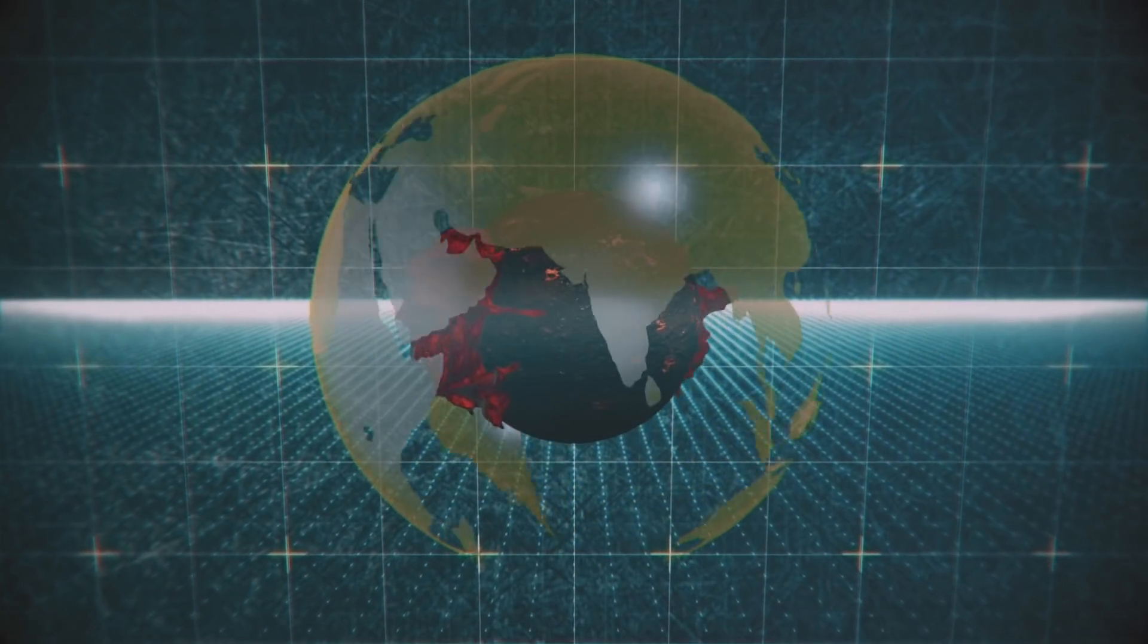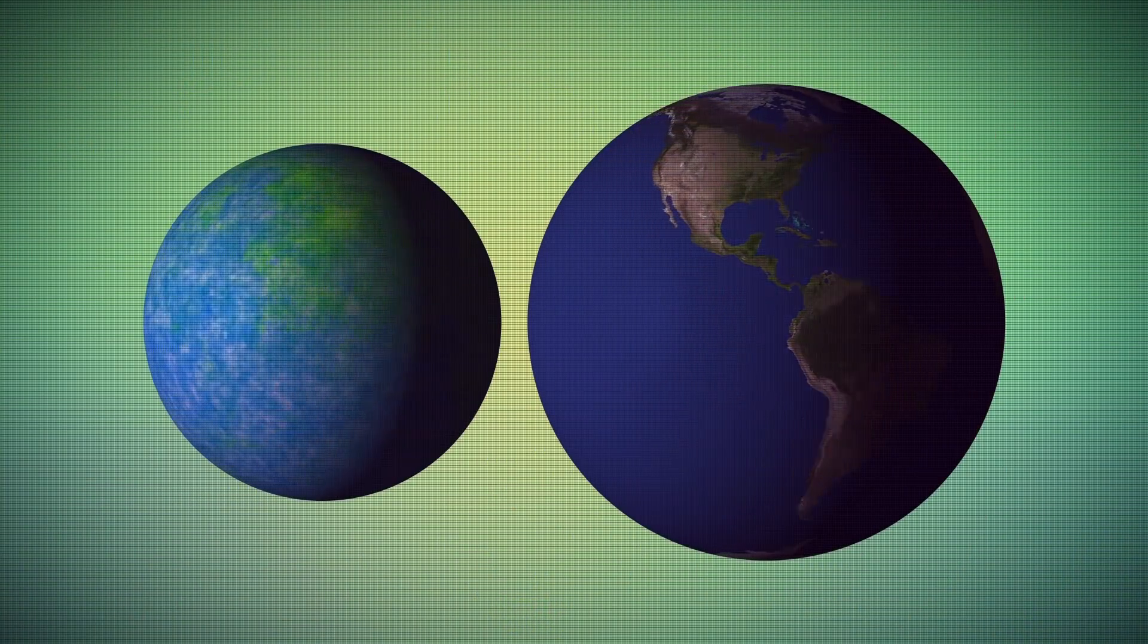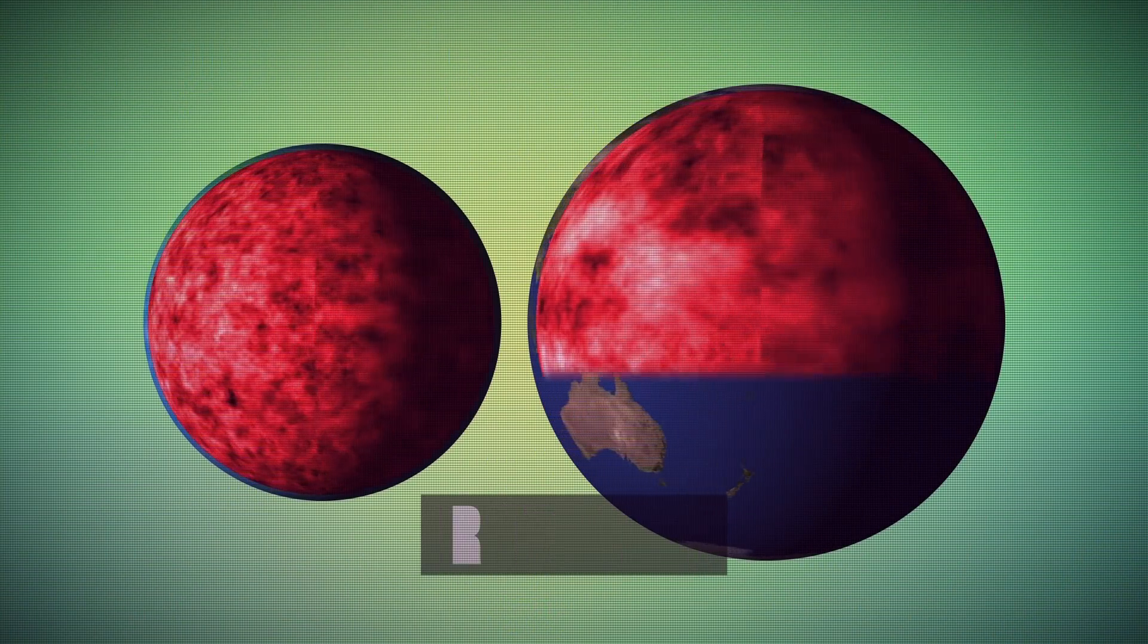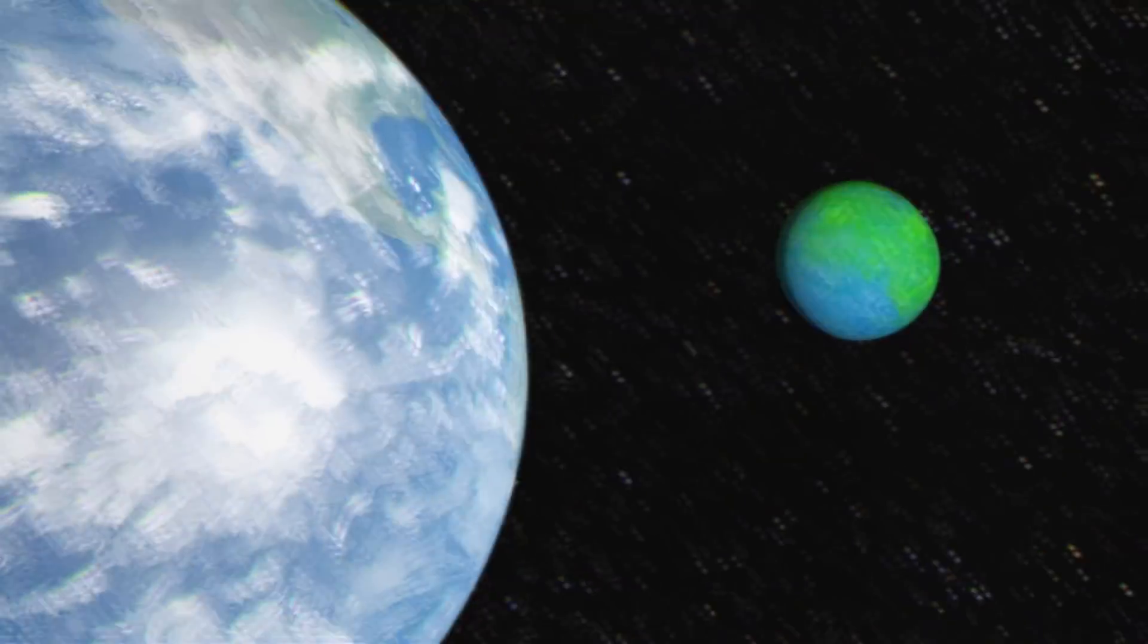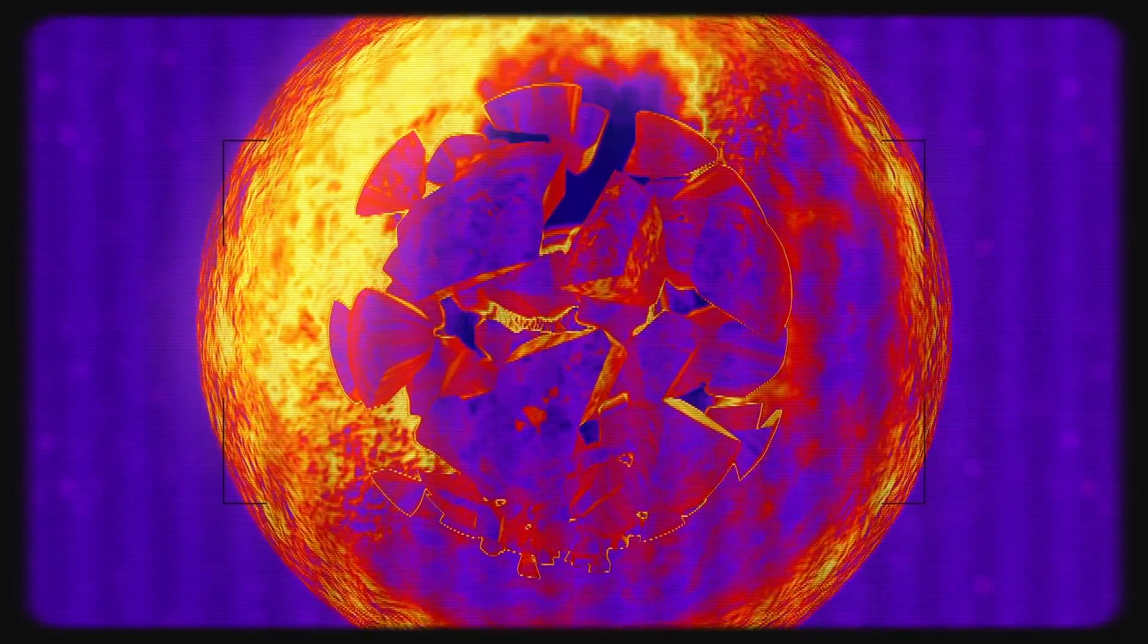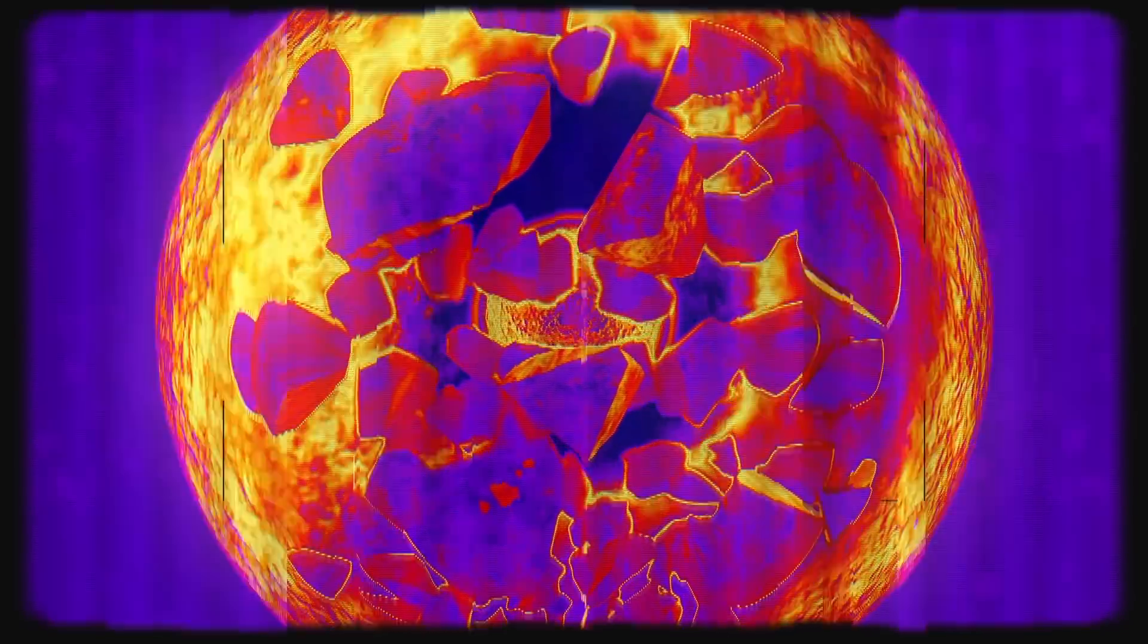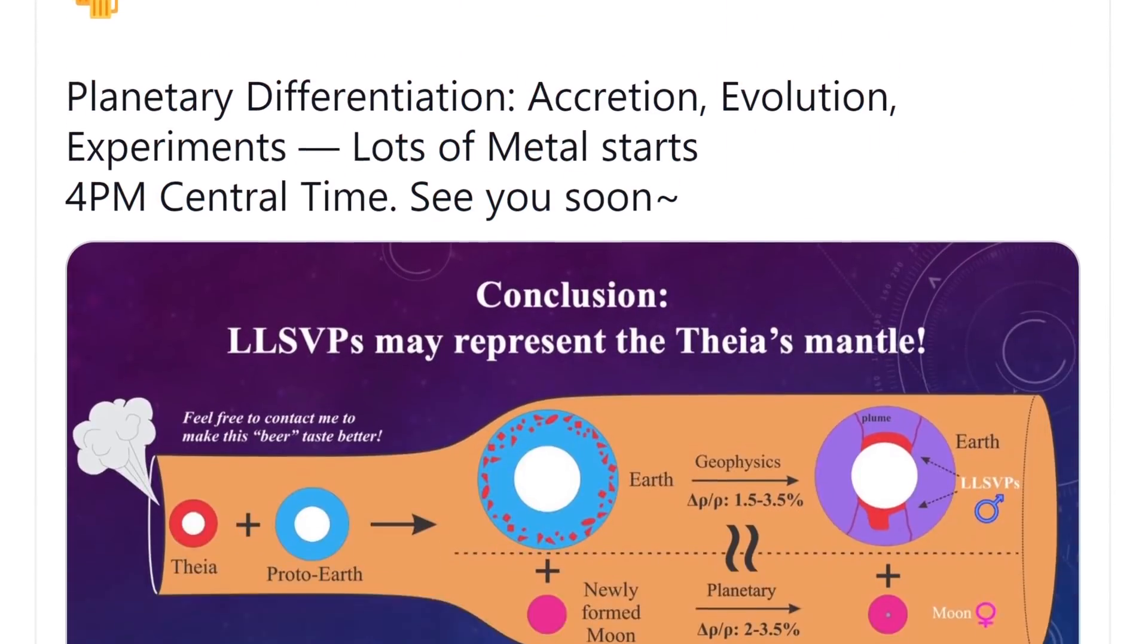In its shape, this anomaly resembles giant headphones. Research suggests that Theia's mantle contained more iron oxide than Earth. This means that it was denser. So when the two planets collided, Theia's mantle sank and was preserved within the Earth's mantle.